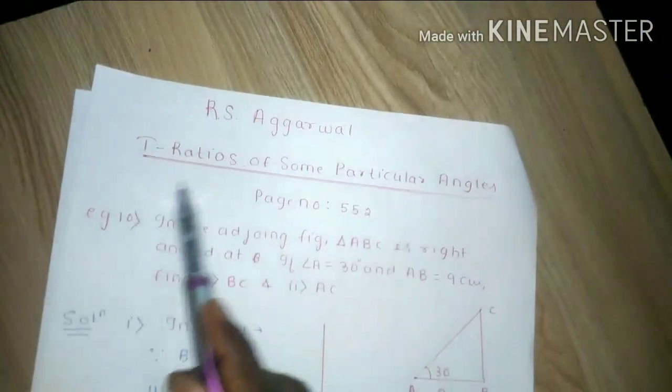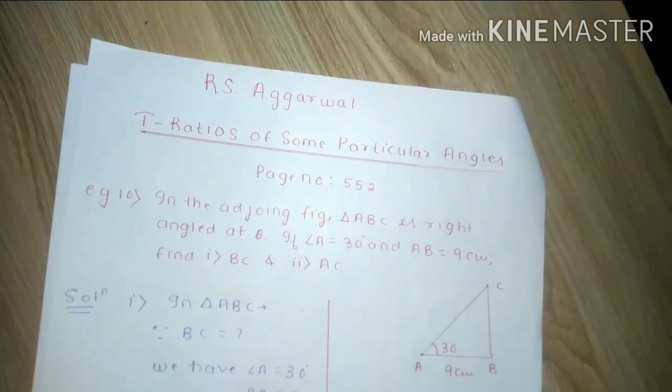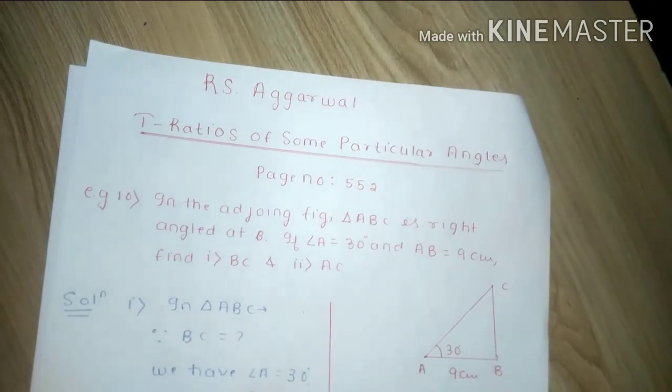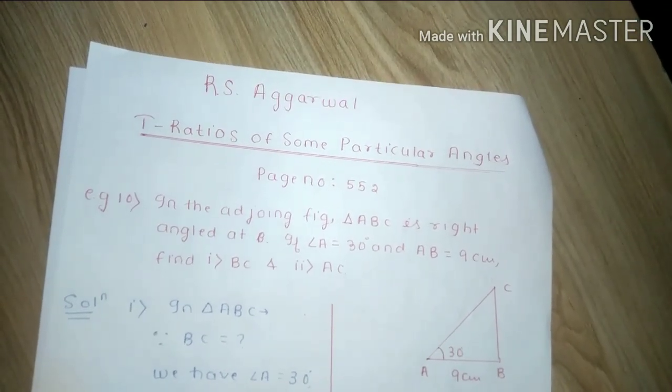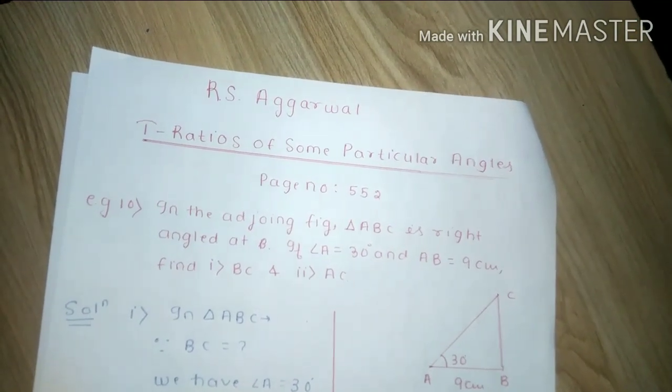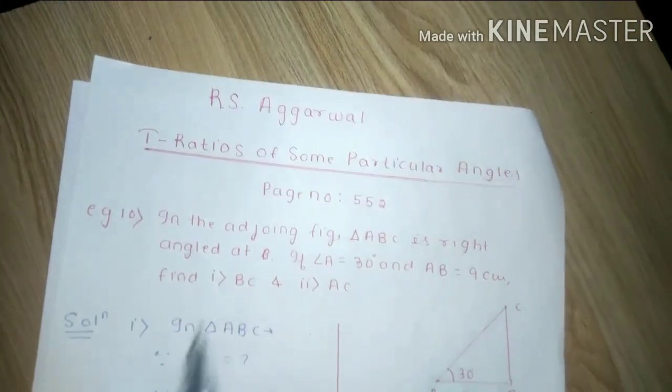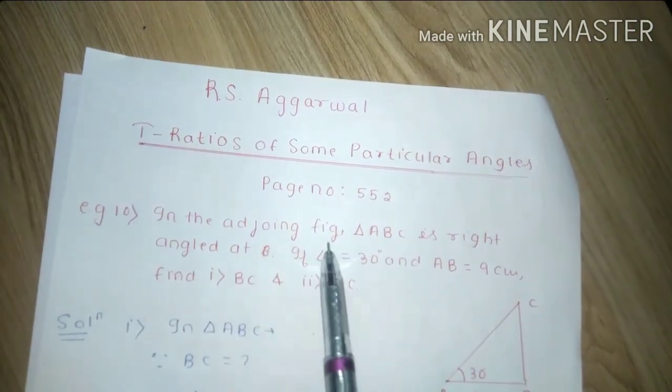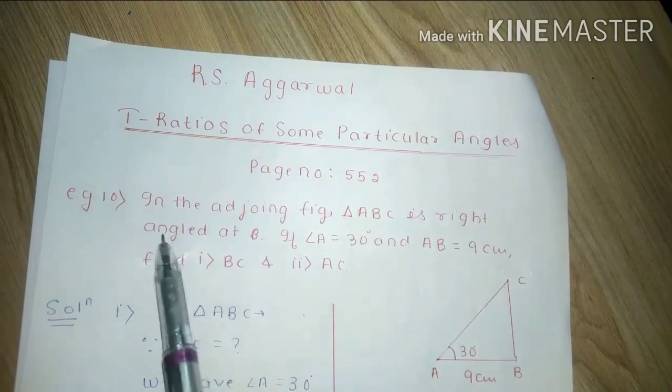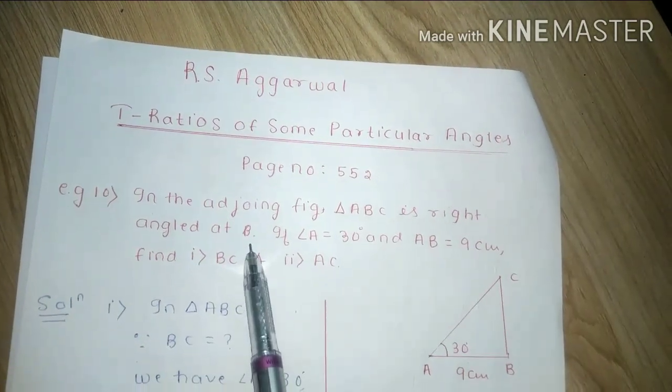I am going to solve the trigonometric ratio of particular angles from page number 552, example number 10, which states that in the adjoining figure ABC is a right angle at B.